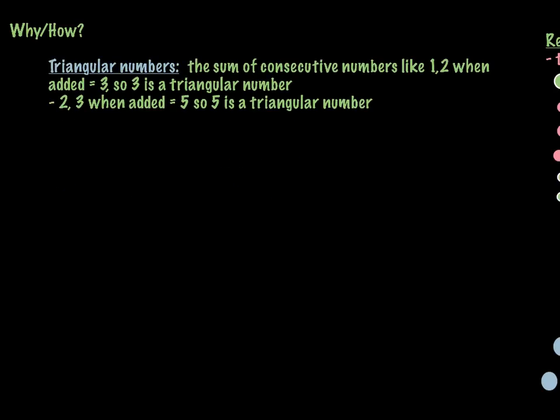Now we're going to talk about what's called triangular numbers. The sum of consecutive, meaning that the numbers come after each other when you count, like one and two, when added, so one plus two is going to give me three, is a triangular number. Another example would be if I had two and three, when I add those, two plus three, I get five. So five is a triangular number.